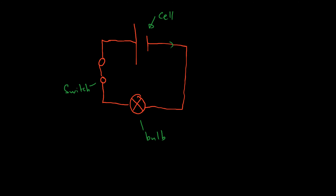The electrons are travelling around like so — they don't have any choice. They have to go through this bulb and out the other side. They have to go through this switch. At the moment the switch is closed, so it allows things to flow. It could be open, which would cut the whole circuit altogether.